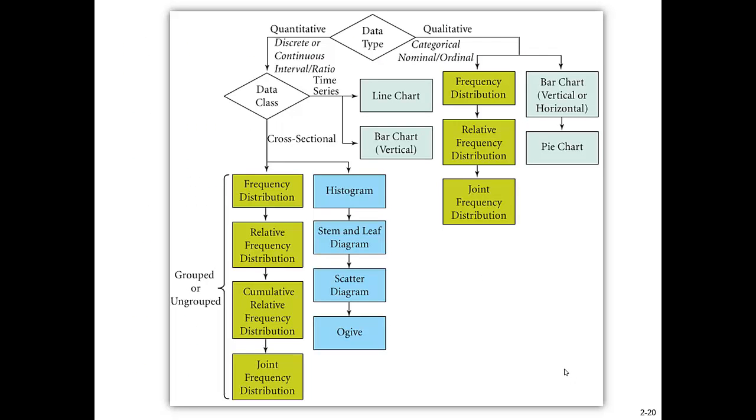So we'll go back to the chart from page 77 and just sort of summarize here. If we have data that is quantitative and cross-sectional, we can summarize that data using frequency distributions, relative frequency distributions, and so on. We can also use histograms, stem and leaf diagrams, scatter diagrams, and the ogive that we talked about in the last video. With time series data, we primarily summarize that data in a line chart or in a bar chart. And we usually use a vertical bar chart for that. With qualitative data, we can use the frequency distribution, the relative frequency distribution, and the joint frequency distribution. We can also use bar charts, either vertical or horizontal bars, and pie charts.